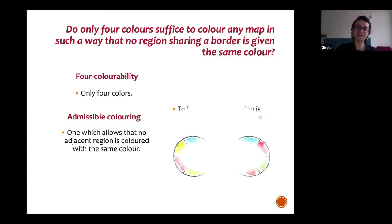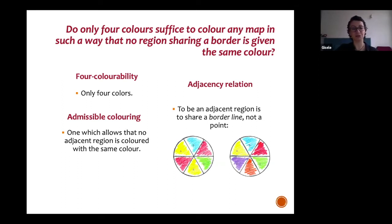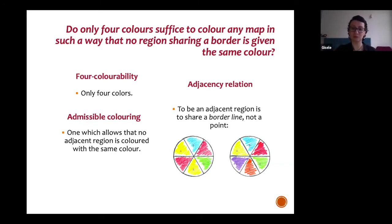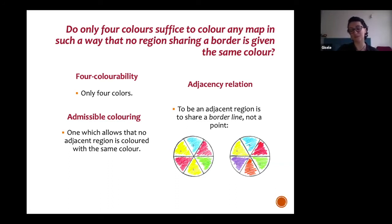This second demand makes us define what it is to be a neighbor — adjacency, adjacent region. One important thing that de Morgan noticed by the time the problem was being communicated to the mathematical community is that to share a border is to share a border line and not a point. Because if you share only a point, either you lose colorability or you lose admissibility of the coloring, as in the counterexamples here.